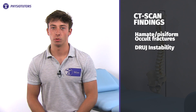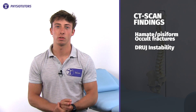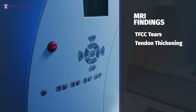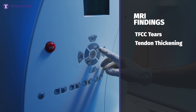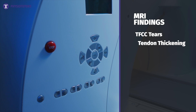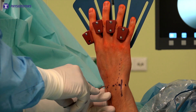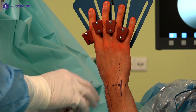CT scans can help to identify occult fractures in the hamate and pisiform, and can check for distal radio-ulnar joint or DRUJ instability as well. An MRI might be useful to diagnose TFCC tears and show tendon thickening in tendinopathies. Dynamic MRIs or CT scans can identify subtle instabilities. However, diagnostic arthroscopy is regarded as the gold standard to diagnose TFCC tears.